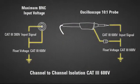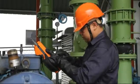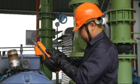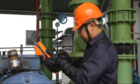With a Cat 3 600 volts safety rating, the U1610A and U1620A handheld scopes are built to work in harsh industrial environments.